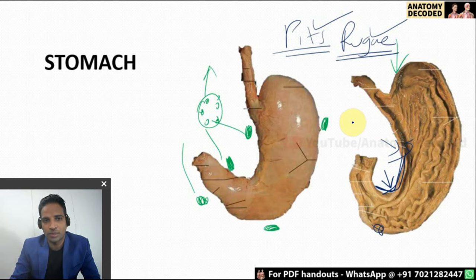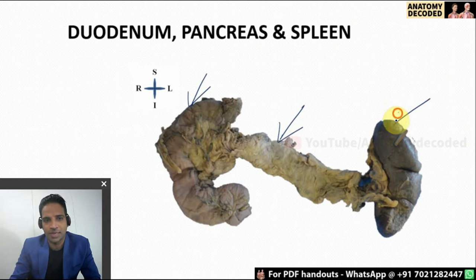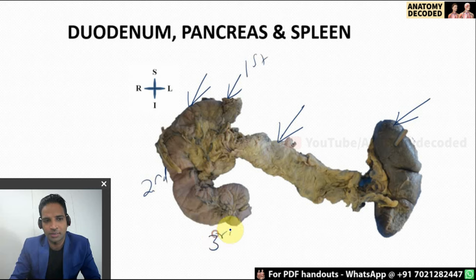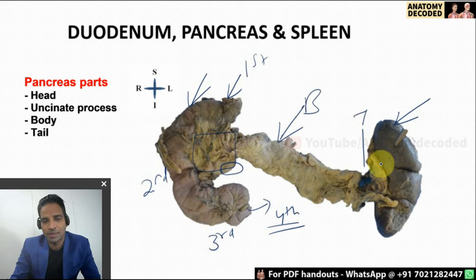Now let us move on to the next organ. In this specimen we can see the duodenum, pancreas, and spleen. Duodenum is a C-shaped organ with four parts: here is the first part, this vertical part is the second part, this horizontal part is the third part, and there is a fourth part extending beyond. In the C-shaped curvature of the duodenum, the head of the pancreas is located. There is a small projection from the head called the uncinate process of the pancreas. This is the body of the pancreas and this is the tail of the pancreas, which is related with the spleen.